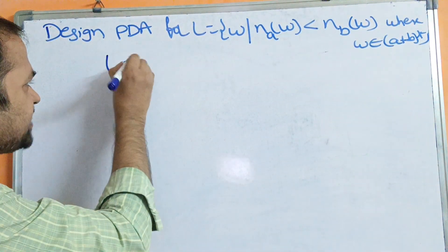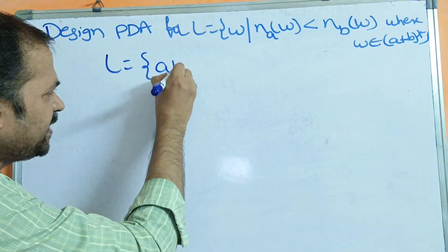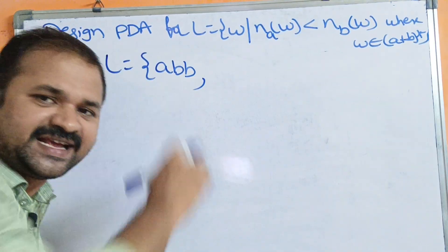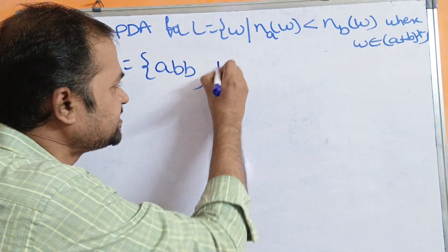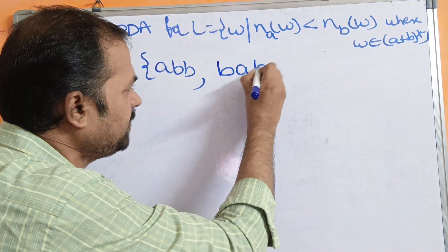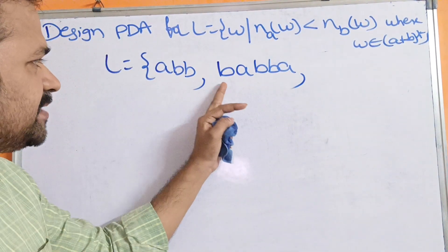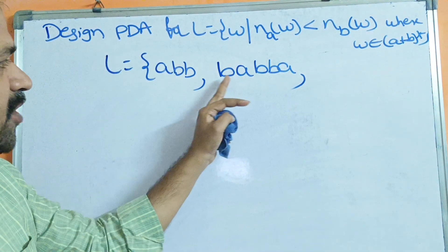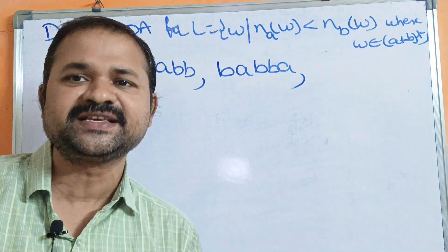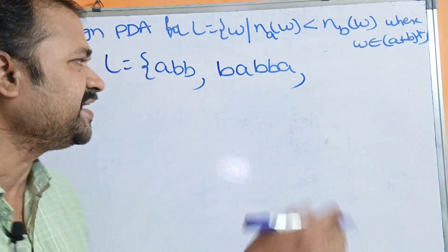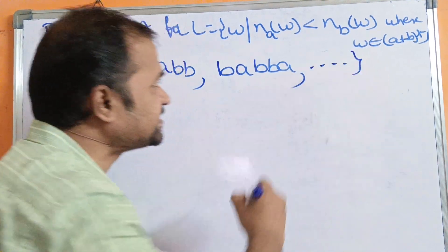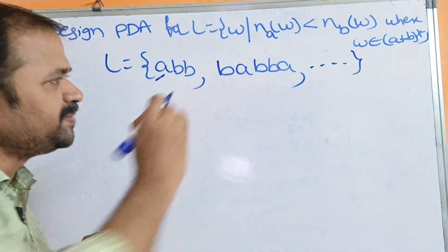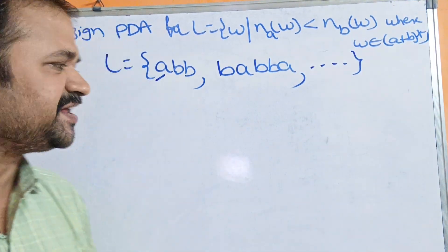We can write the language as L containing ABB. Number of A's are 1, number of B's are 2 in that string, and 1 is less than 2. Likewise, for the string BABBA, number of A's are 2 and number of B's are 3, so 2 is less than 3. So A's are less than B's. We can have N number of such strings where number of A's must be less than number of B's.